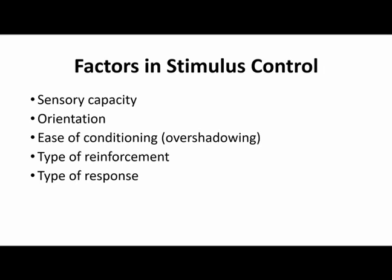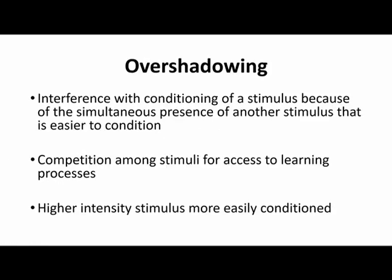Today we're going to continue and talk about how stimulus control can depend on other stimuli in a situation. Specifically, we're going to look at overshadowing — the interference with conditioning of a stimulus because of the simultaneous presence of another stimulus that is easier to condition. This means that if two or more stimuli are presented at the same time, not all of them will necessarily be encoded equally.